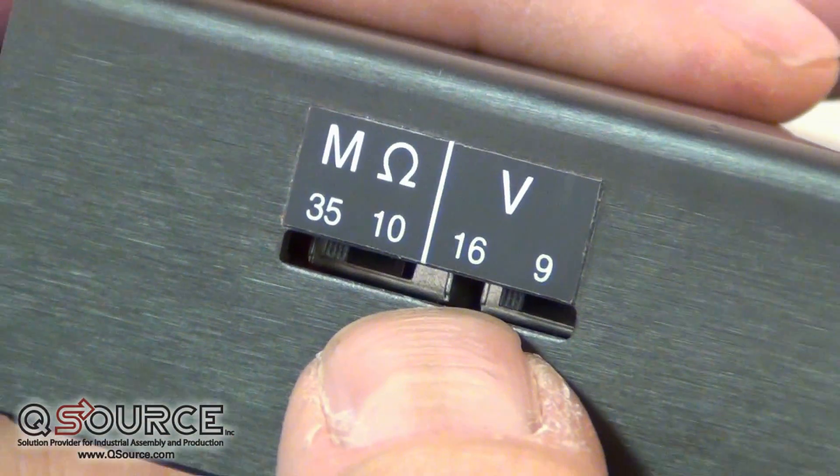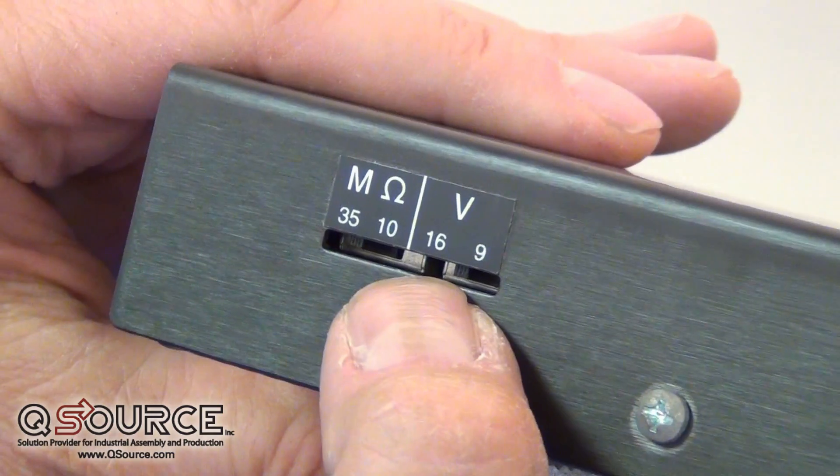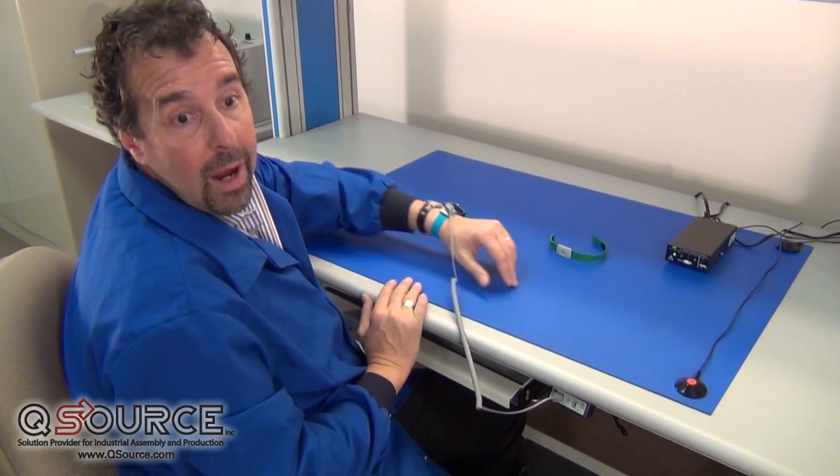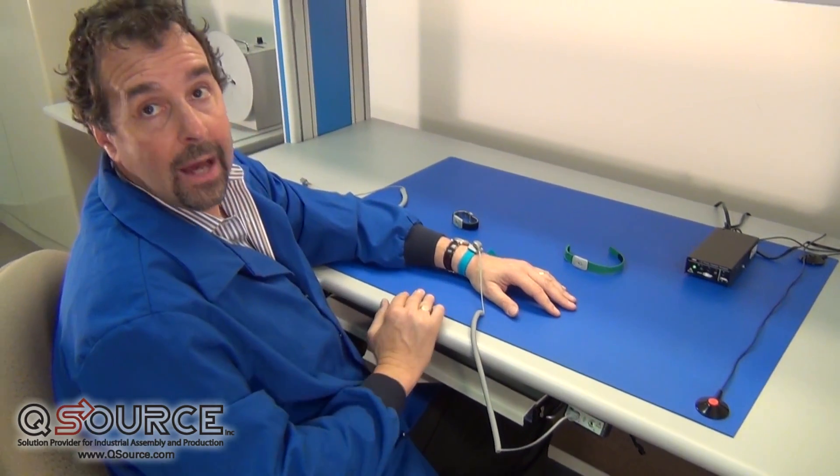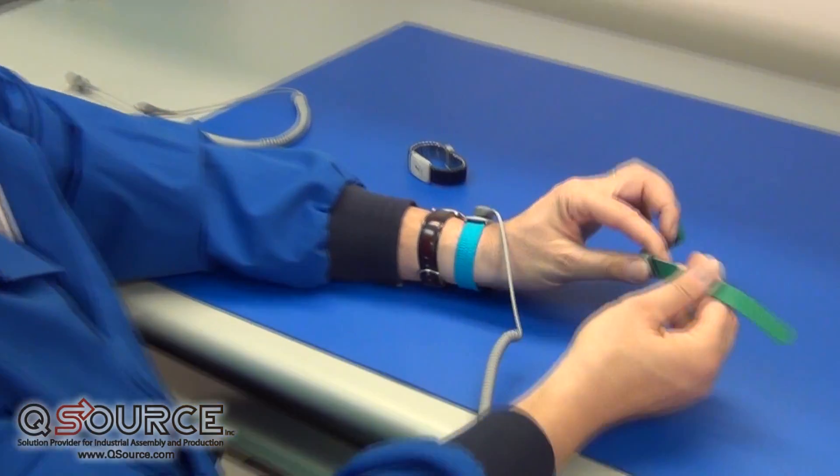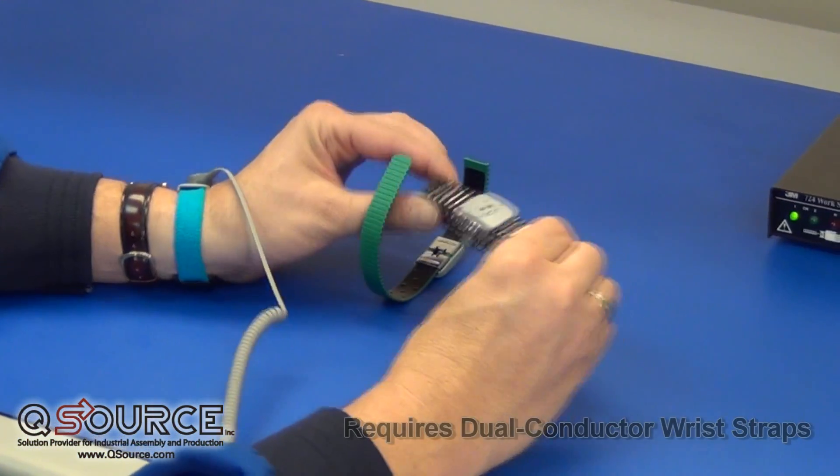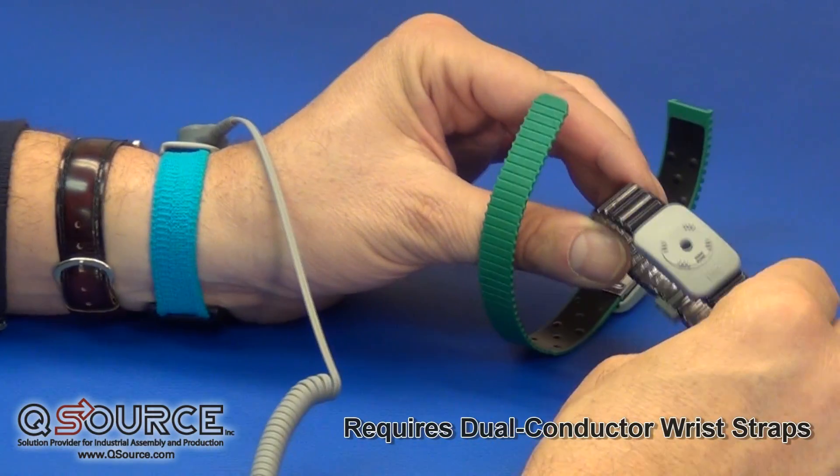There are a variety of wrist strap and wrist band options. There's a fabric band, an adjustable plastic band, and metal or Speidel bands for the 3M 724.